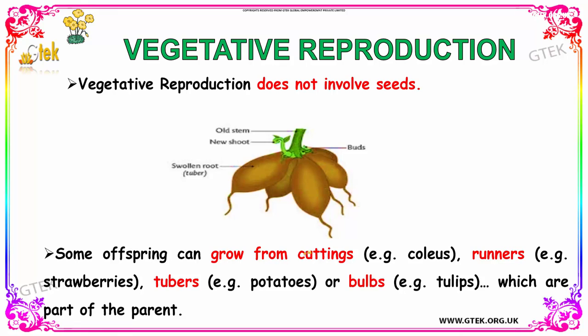Now we are going to discuss vegetative reproduction. Vegetative reproduction does not involve seeds. Some offspring can grow from cuttings — for example, stolons and runners in strawberries, and tubers in potatoes. You can see the potato and the tuber here — that is the swollen root.